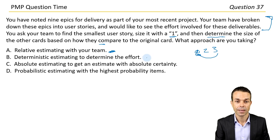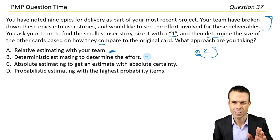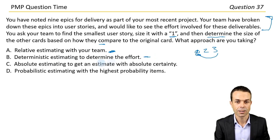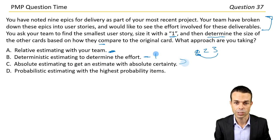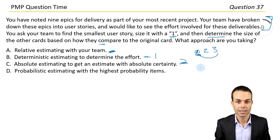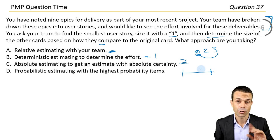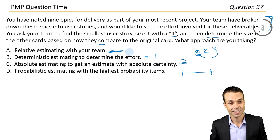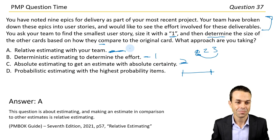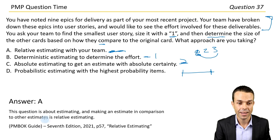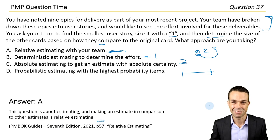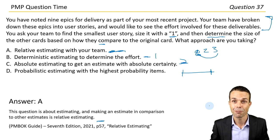Deterministic estimating is that specific number. Absolute estimating is also a specific absolute number. Probabilistic estimating involves probabilities, which is not what we're doing here. For us it is relative estimating. This question is about making an estimate in comparison to other estimates — that is relative estimating. Page 57 under relative estimating in the PMBOK Guide 7th edition.